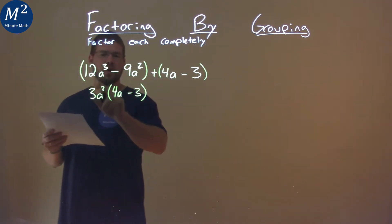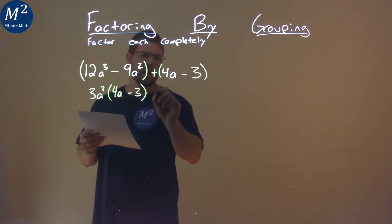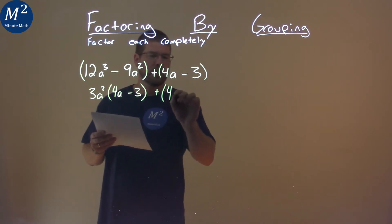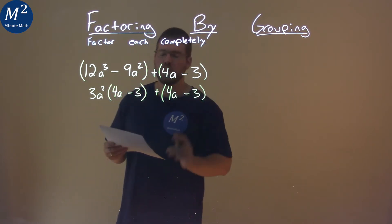So, that 3a squared comes out of the 12a cubed. We're left with a 4a, and 3a squared out of 9a squared is just a 3. Plus, bring down the 4a minus 3 here.